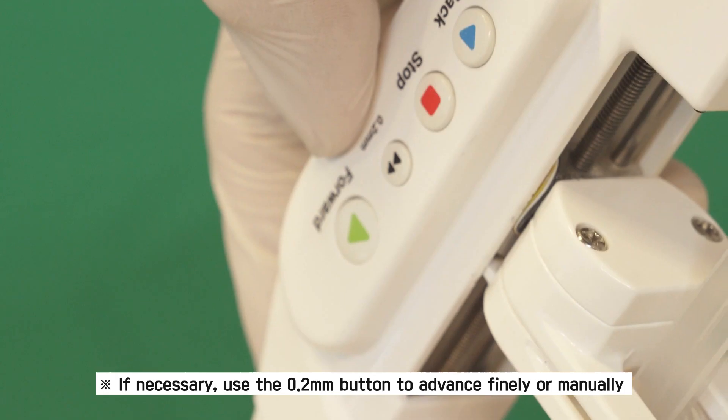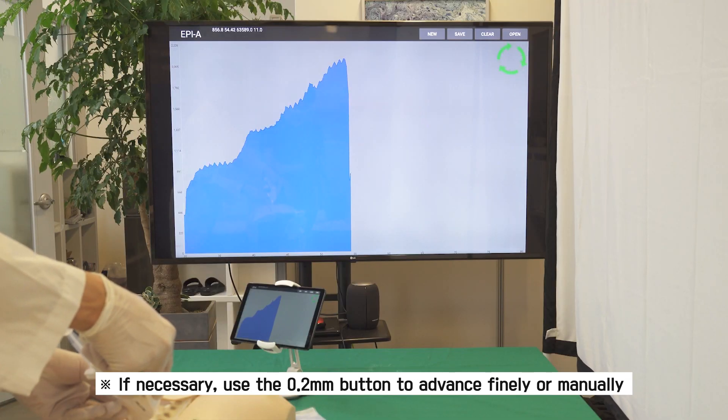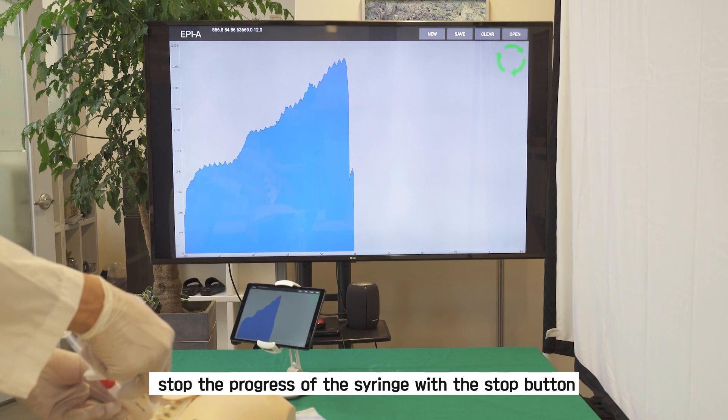If necessary, use the 0.2 mm button to advance finally, or manually stop the progress of the syringe with the stop button.